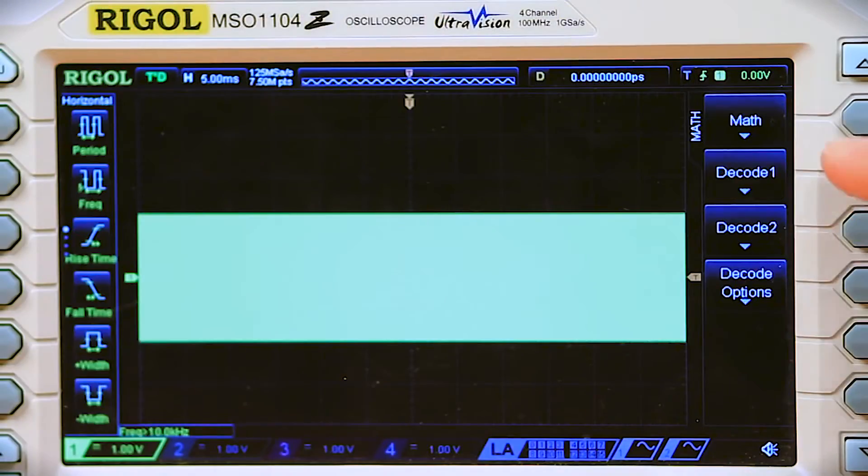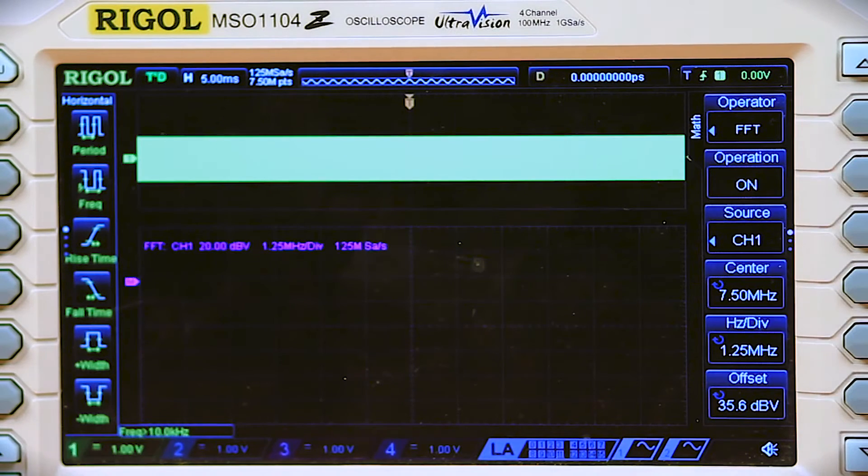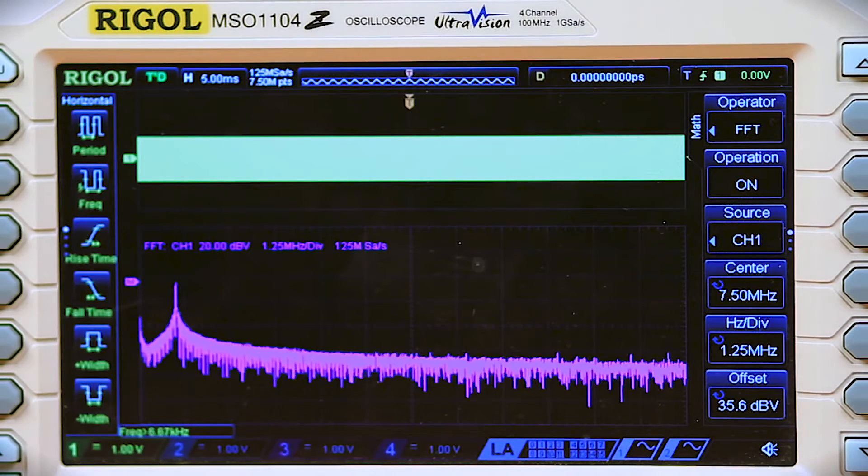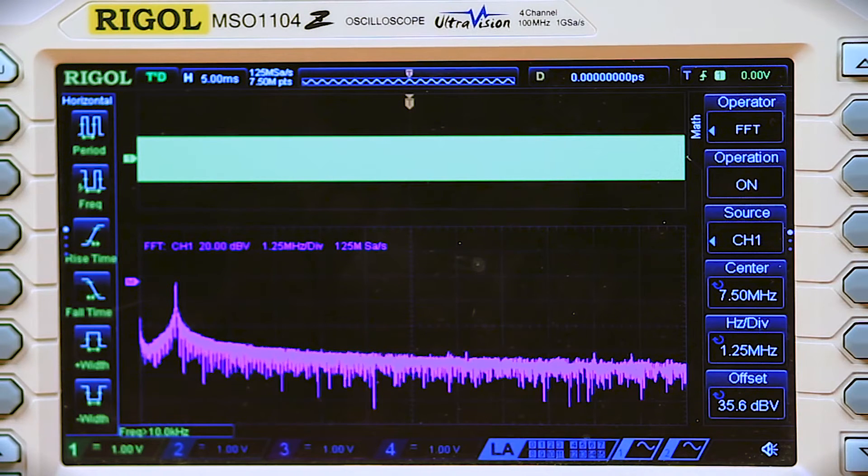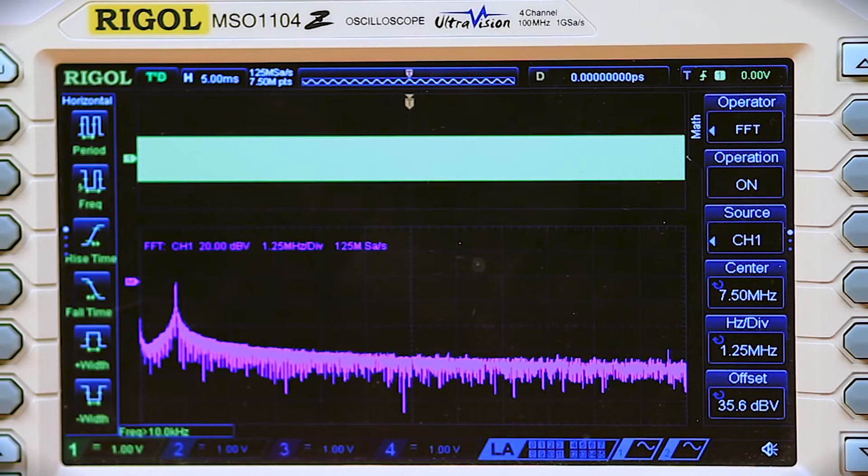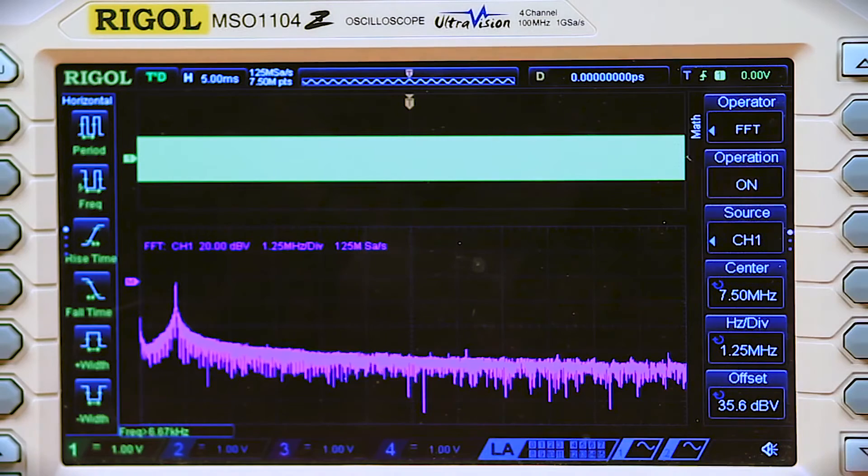The scope also has what's called a memory-based FFT mode. Right. This is a computational mode that lets the scope calculate FFTs from the analog data it has acquired. The deep memory mode is a way of giving you a lot more data to analyze when you're looking at the frequency information in the captured waveform.